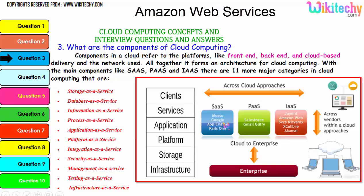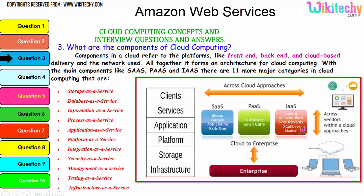For Software as a Service, examples include Google App Engine and Zoho. For Platform as a Service, examples are Gmail, Glyphi, and Salesforce. For Infrastructure as a Service, you have companies like Amazon Web Services, Akamai, and others.